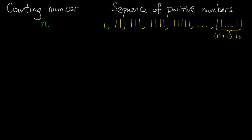First, let's use n to denote our counting number. Then, we are going to consider a sequence of positive numbers: 1, 11, 111, 1111, and then 4 ones, 5 ones, etc., all the way until a number that has n plus 1 digits, where all digits are 1s. There are altogether n plus 1 numbers in this sequence, and we are going to divide each of these numbers by n and study the remainders obtained from these divisions.